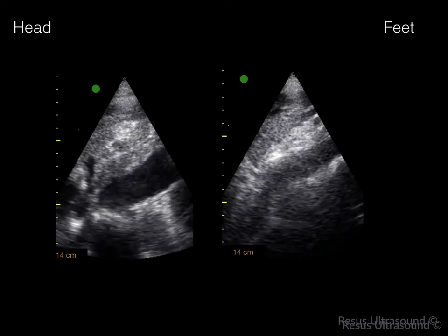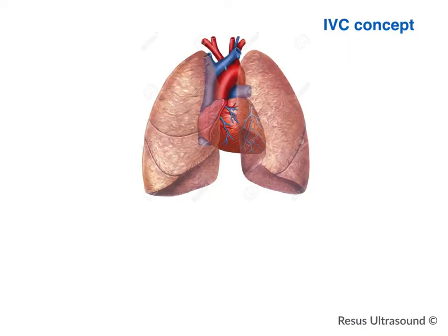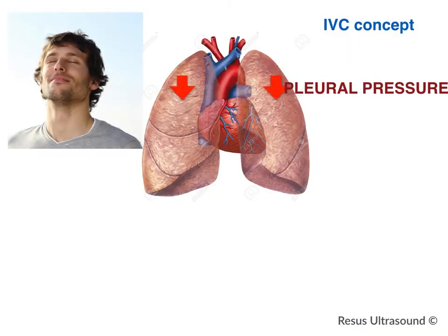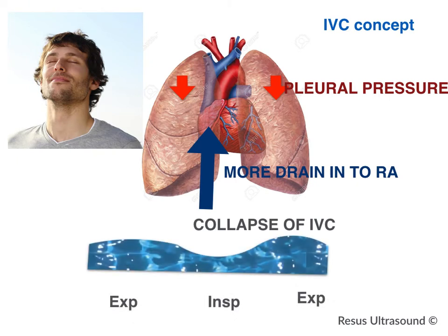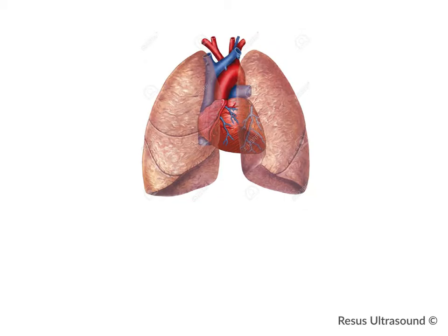The aorta is located downward toward the patient's back. Now understand the concept of IVC: when you breathe in, pleural pressure goes down, and the IVC drains nicely into the RA. When it drains in very easily, the IVC diameter collapses. When you inspire, the diameter should change more than half, or 50% — this is called the collapsibility index of 50%.